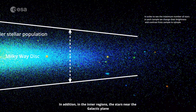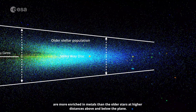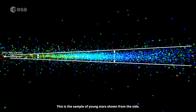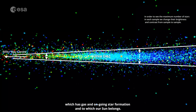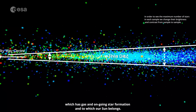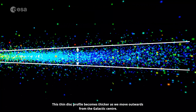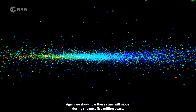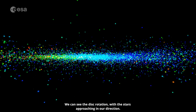In addition, in the inner regions, the stars near the galactic plane are more enriched in metals than the older stars at higher distances above and below the plane. This is the sample of young stars shown from the side. The stars in the spiral arms are located in the so-called thin disk, which has gas and ongoing star formation, and to which our Sun belongs. This thin disk profile becomes thicker as we move outwards from the galactic centre. Again, we show how these stars will move during the next five million years. We can see the disk rotation, with the stars approaching in our direction.